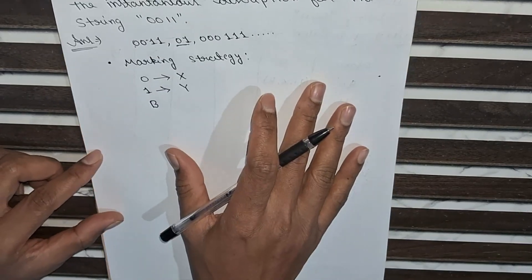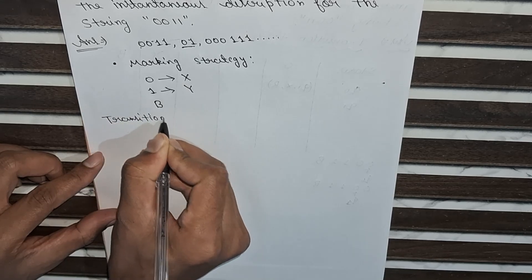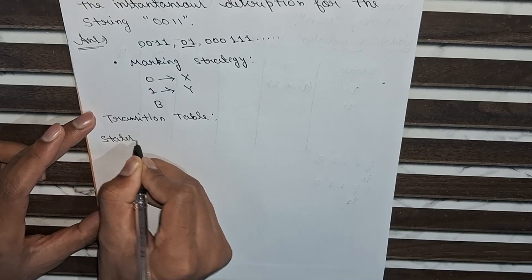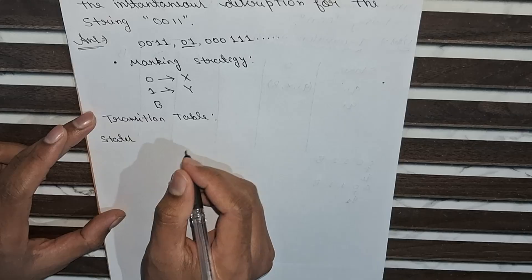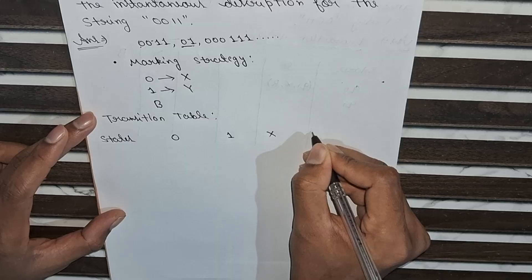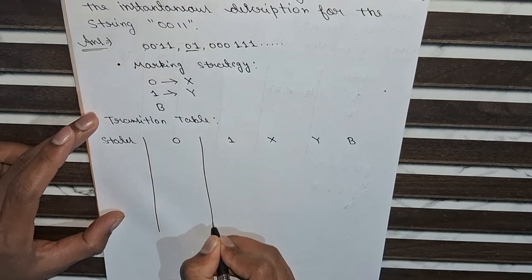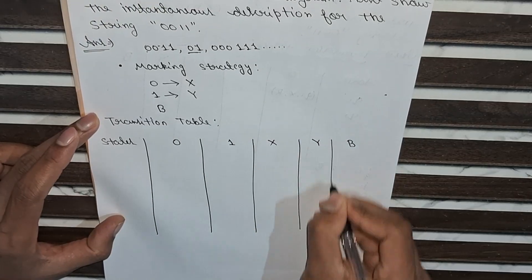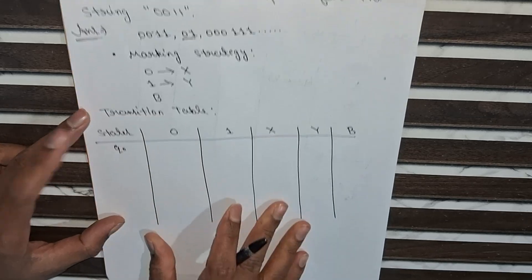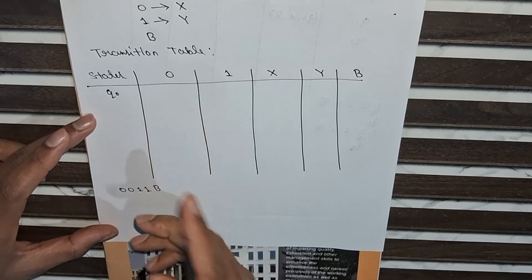Now I will make the transition table. In this transition table I will firstly write the states used to build this Turing machine, and the input symbols: 0, 1, X (conversion of 0), Y (conversion of 1), and one blank symbol. The initial state will be q0, and we take the string 0011 and blank.